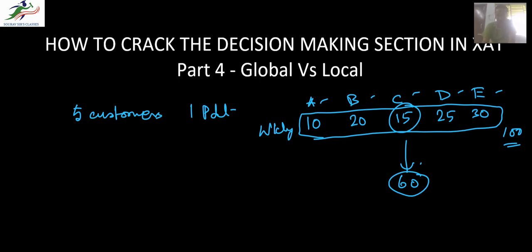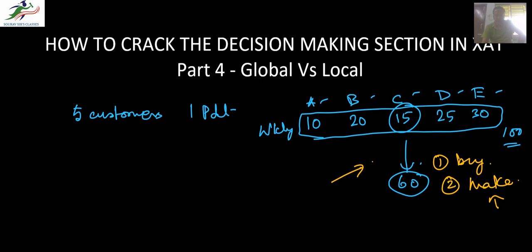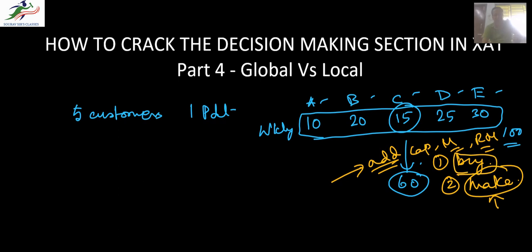What options do I have? There are two: I can buy the product, or I can make the product. If I want to make the product, I would have to add manpower capacity and get raw materials — but I don't have time because the customer is not willing to wait. So I have no choice but to buy the product. It might even happen that I decide to buy the product from my nearest competitor and serve my customer.